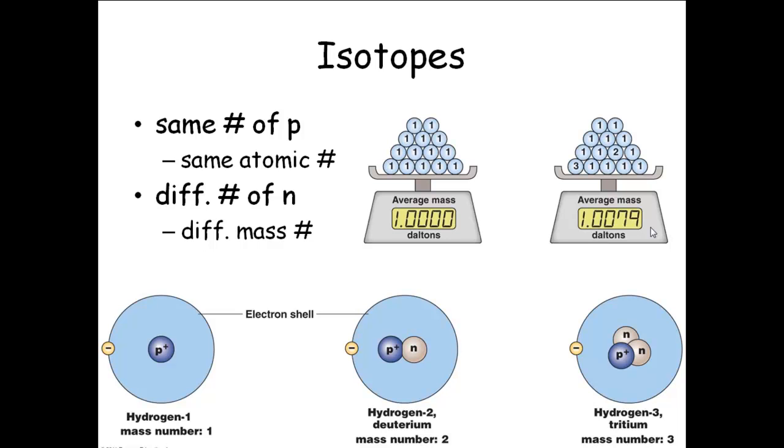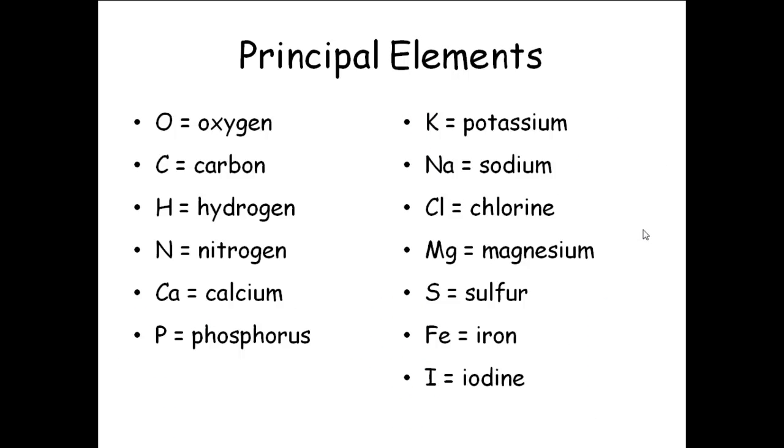We're not going to have to learn all of these symbols. But there are some that you're going to have to learn. Some of these are easy: O for oxygen, C for carbon, H for hydrogen, N for nitrogen, Ca for calcium, P for phosphorus. Then it gets a little weird: K for potassium, Na for sodium. They couldn't use S for sodium because S is for sulfur. Fe for iron. Those are the chemical symbols that you're just going to have to know. Those are the ones that we're going to see the most often, particularly sodium and potassium. We're going to see those quite a bit.